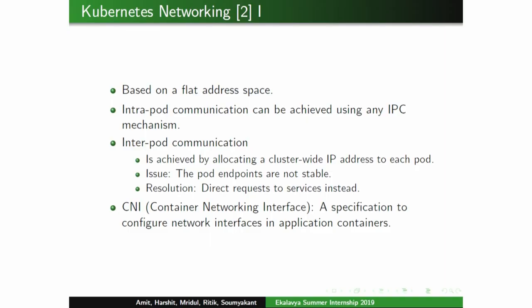Kubernetes networking is based on a flat address space model: each pod is assigned a cluster-level IP and can communicate without network address translation. Containers in the same pod share the same namespace and communicate via localhost. For inter-pod communication, pods use their cluster-level IP, and since endpoints aren't stable, a Service object can be used. A Container Network Interface (CNI) defines how plugins for Kubernetes can be written.